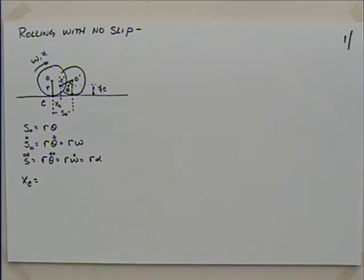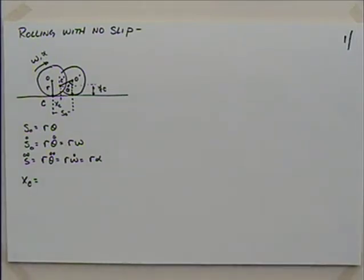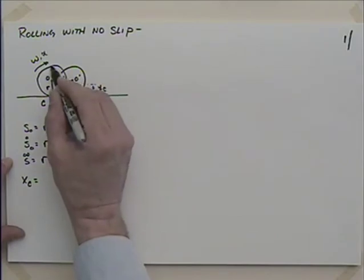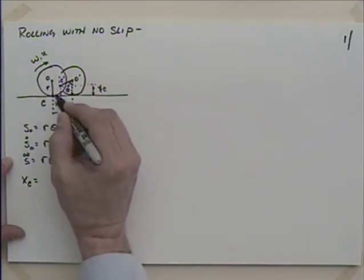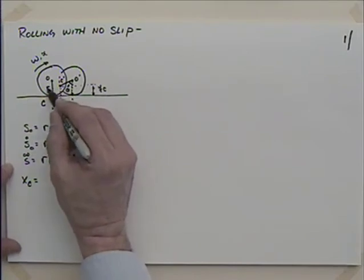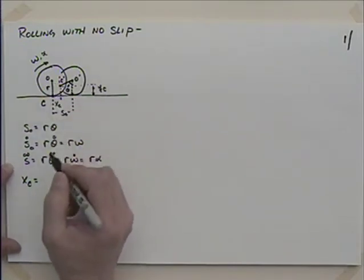I want to talk about rolling with no slips - something as simple as a tire or disc rolling along the ground. Unlike the pictures here, we'll try and keep it with a constant radius. You can think of this as a three-dimensional problem: a ball rolling along the ground, or a cylinder like a rolling pin. At one point in time, this disc or tire or ball with radius R has a contact patch down here.